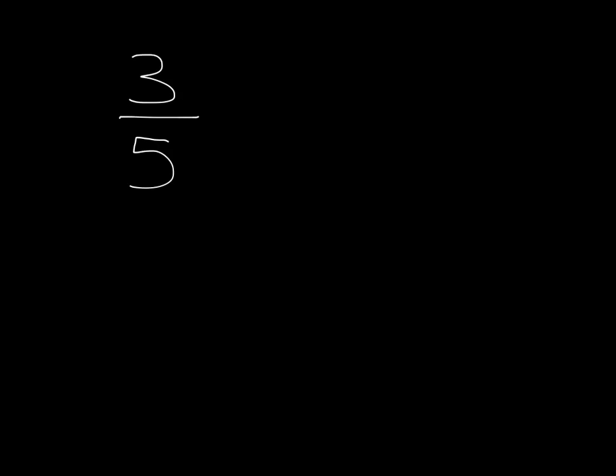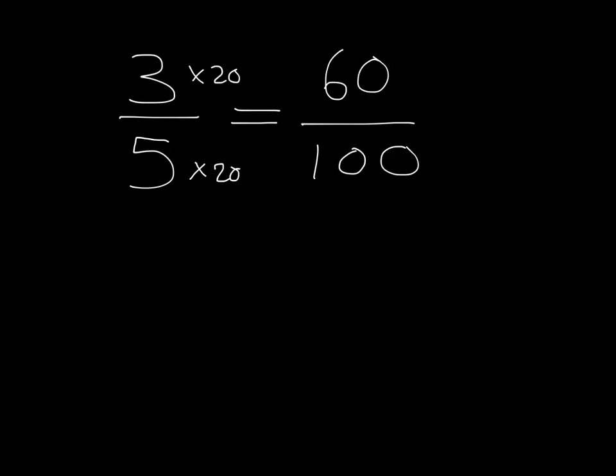So now imagine you're asked to take a fraction and write it as a percentage. Let's start with a fraction that isn't so obvious — let's start with 3 fifths. You know that percentage means over 100, so all you have to do is make an equivalent fraction with a denominator of 100. What have we multiplied 5 by to get 100? Well, it's been multiplied by 20. So we do that to the top as well and we get 60 over 100 — so 3 fifths is the same as 60 percent.